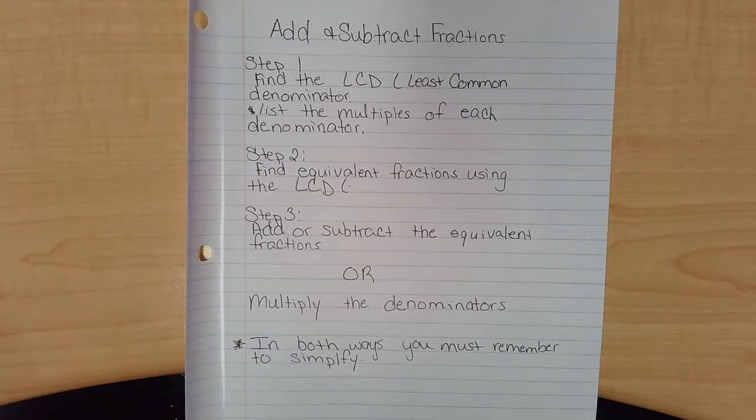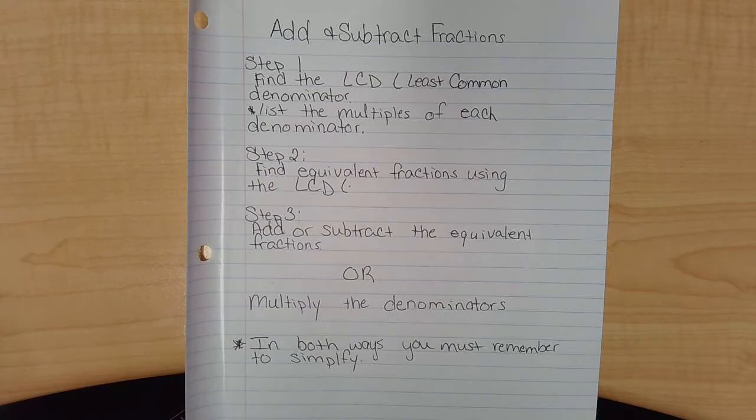Step one, you must find the LCD, which is the least common denominator. To remember how to do that, you list the multiples of each denominator.